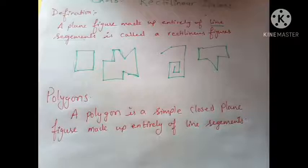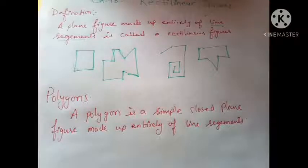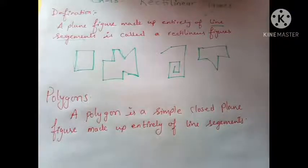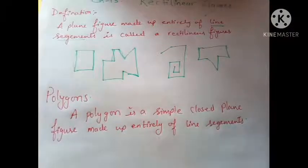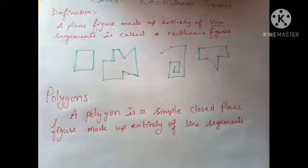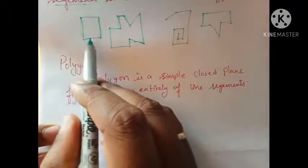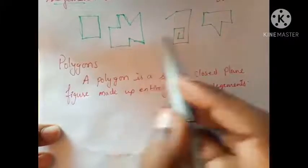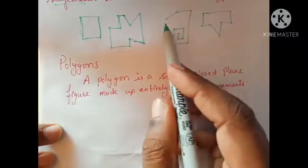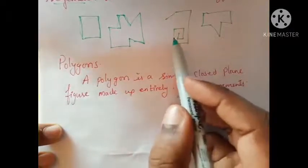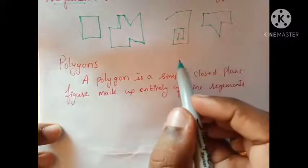Now let's study about a category of rectilinear figures. The very first thing that comes to mind is polygons. A polygon is a simple closed plane figure made up entirely of line segments. So it's also made up of line segments but it must be a closed plane. A closed figure like this is a polygon; this is also a polygon. If a figure is not closed, it is not a polygon.